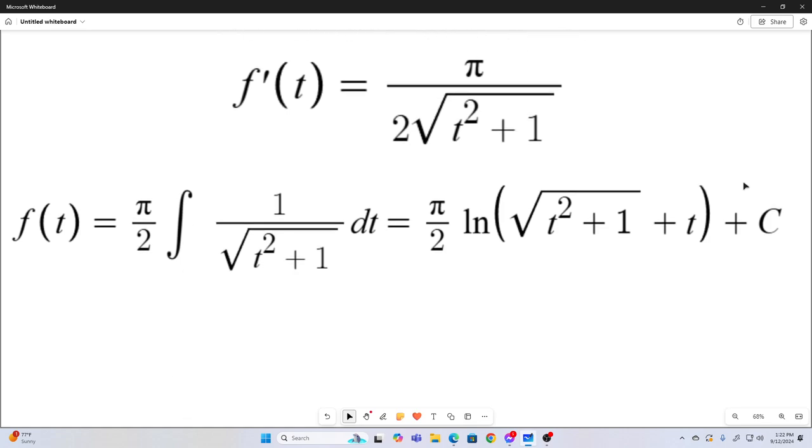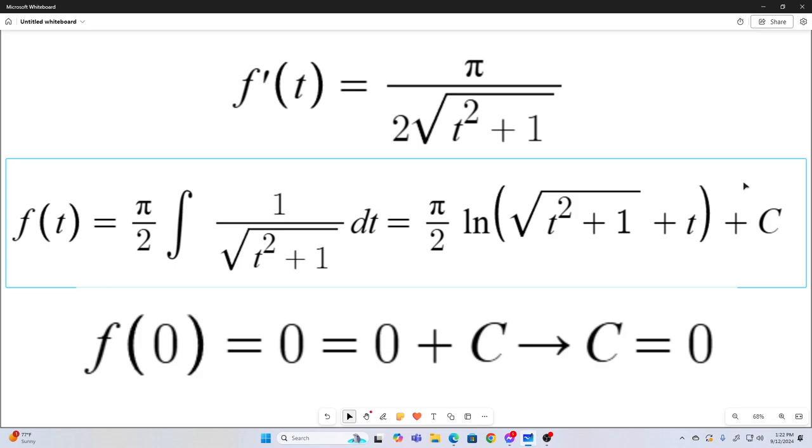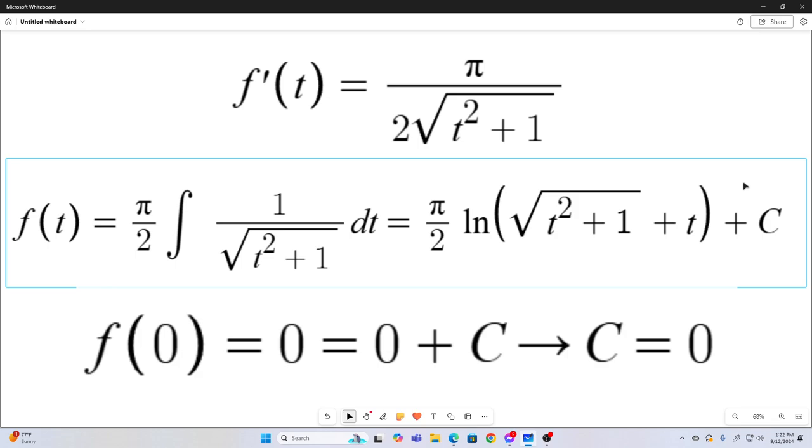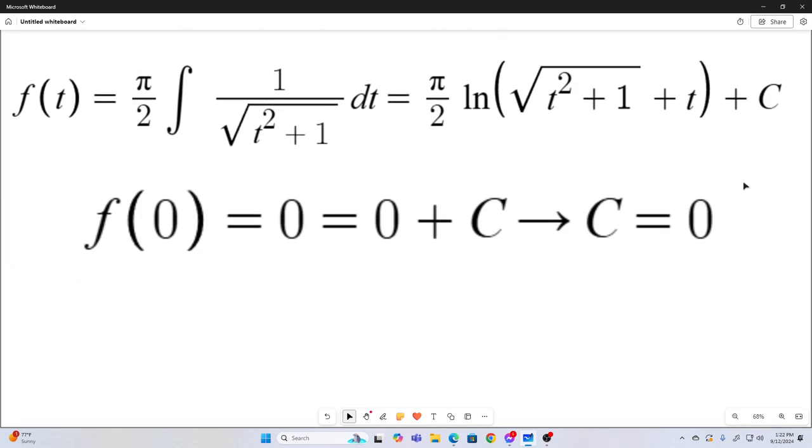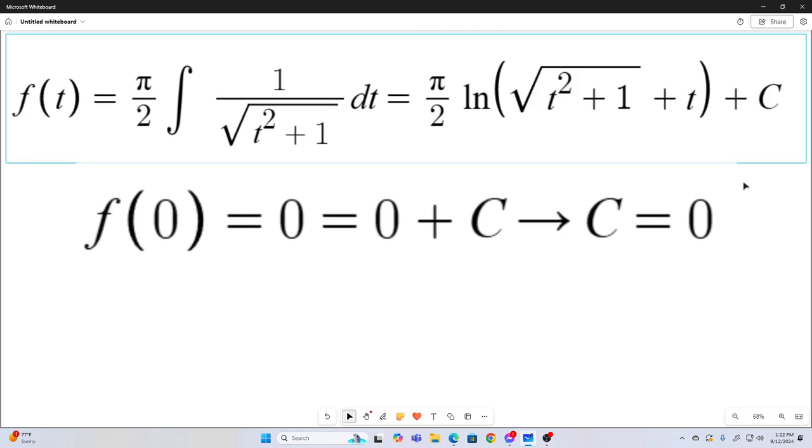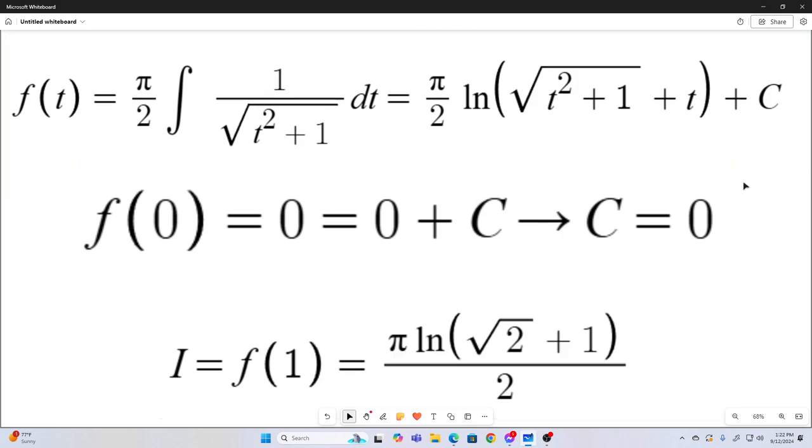So now let's use the fact that we know f of 0 is equal to 0 to determine that our c is equal to 0. So we plug in c is equal to 0, and we have our closed form expression for f of t. So we know that our i is going to be equal to f of t evaluated at the point t is equal to 1. Plugging in t is equal to 1 gives you this.